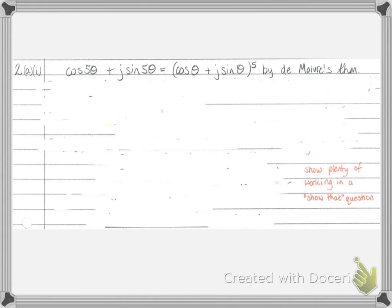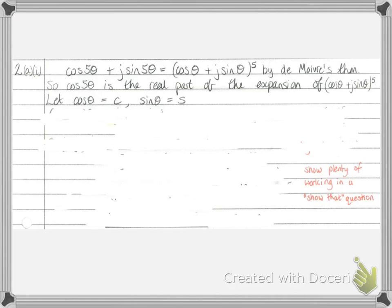First we're required to express cos(5θ) in terms of cos(θ). We can use de Moivre's theorem to get that cos(5θ) + j·sin(5θ) is (cos(θ) + j·sin(θ))^5. This helps because if we expand (cos(θ) + j·sin(θ))^5 using binomial expansion, the real part will be an expression for cos(5θ). To make the notation simpler, I like to write cos(θ) as c and sin(θ) as s.